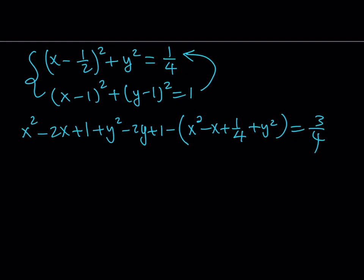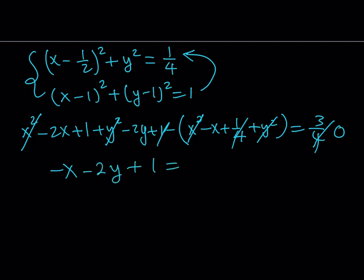Let's simplify. The x² and y² terms cancel out. We get −2x + x = −x, and 1 − 1/4 = 3/4 also cancels with the right-hand side, but we retain the constant 1 from the left. This leaves us with −x − 2y + 1 = 0, a linear relationship between x and y. We can write this as x = 1 − 2y.